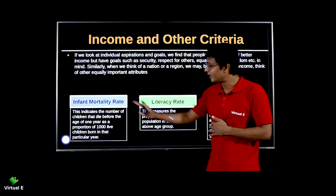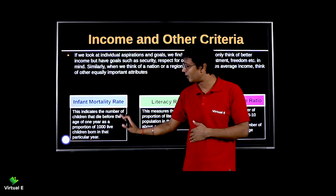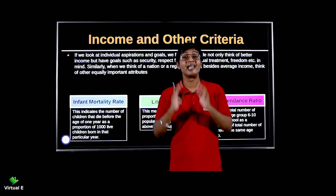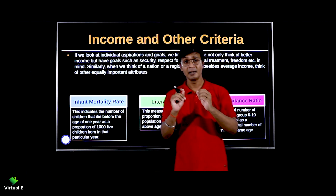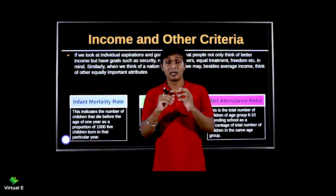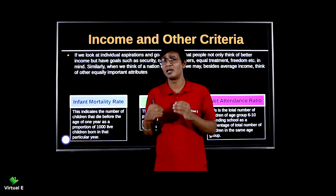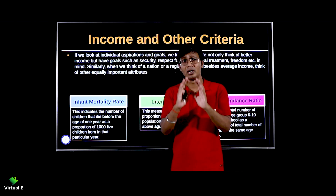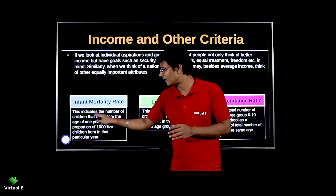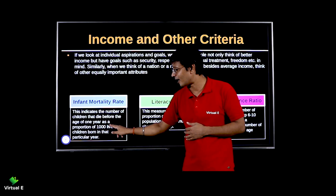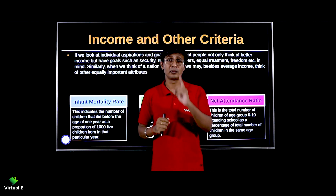There is one thing called infant mortality rate which we use to talk about health status. Infant mortality rate is simply: if a child dies below the age of one, the ratio is considered per thousand live births. The number of children that die before the age of one year as a proportion of thousand live births is called infant mortality rate.